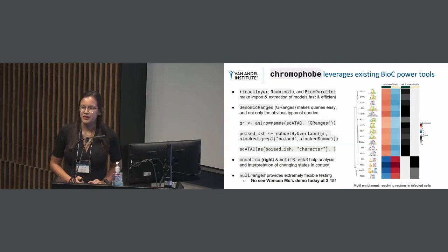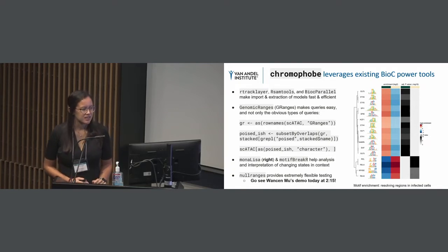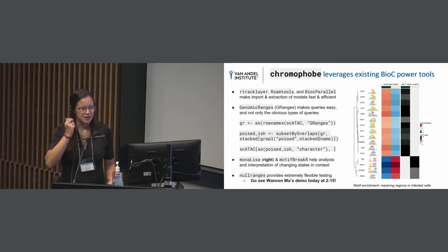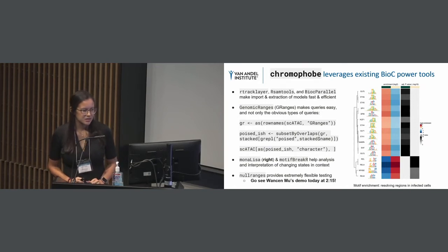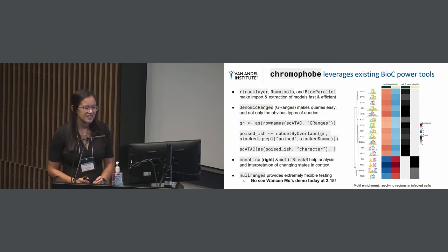This brings me to our work on our package, Chromophobe. Bioconductor has many powerful tools that can facilitate genomic analysis. Using things like Rtrack layer, RSAMtools, and BiocParallel, we are able to facilitate the import and extraction of models. We're able to use genomic ranges to make queries easier, extracting poised regions and subsetting based on that. We're also able to use motif analysis packages such as Mona Lisa and motif breaker to facilitate interpretation of results, such as which transcription factors are being regulated, as well as null ranges for hypothesis testing.